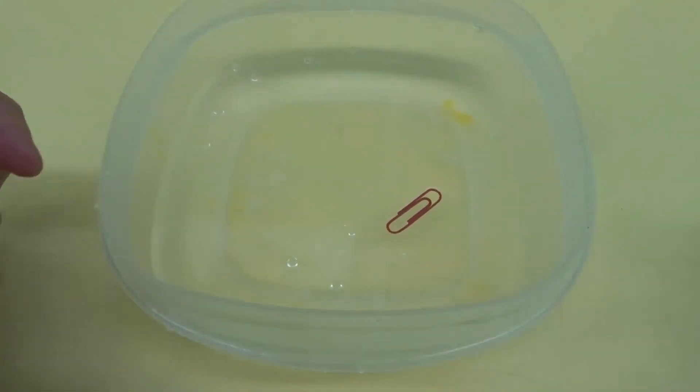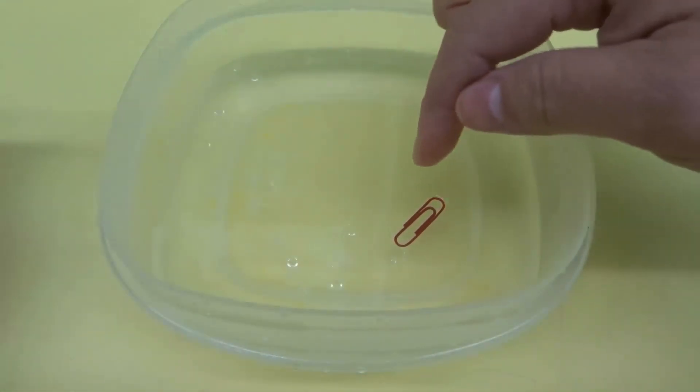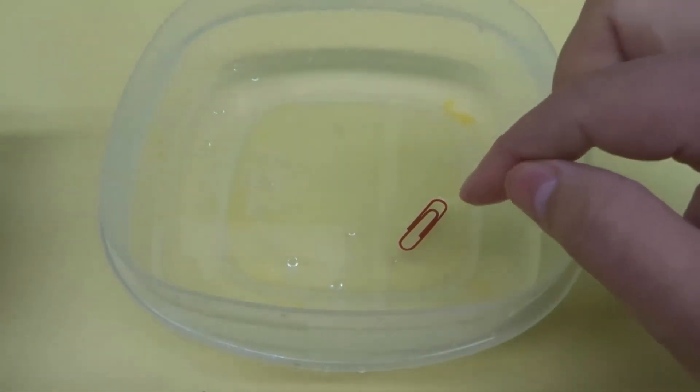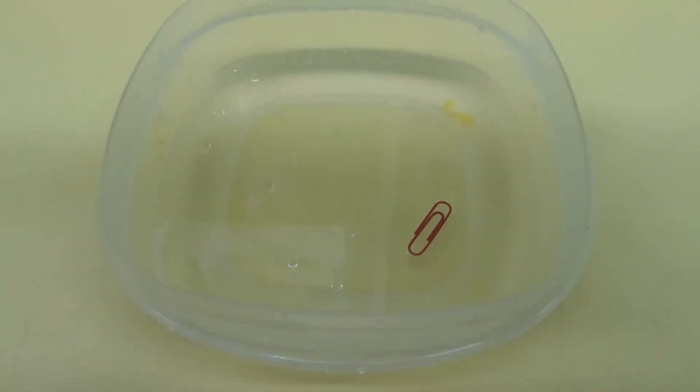And the reason it does that is because right now the shape of the paperclip is allowing the water on the outside of the paperclip to be a little bit higher up than the water on the inside. So it's kind of just sitting on the water.